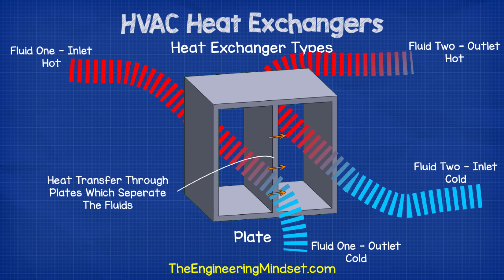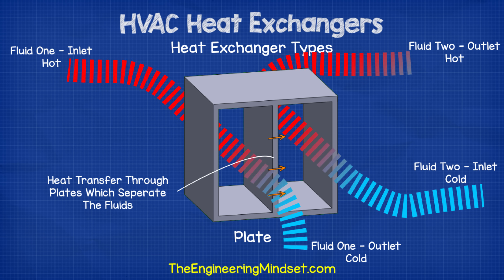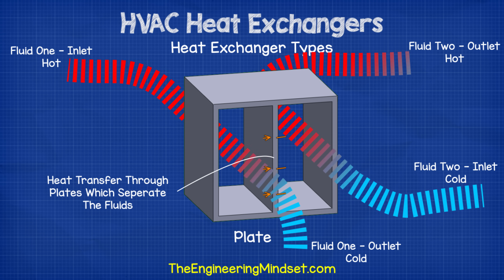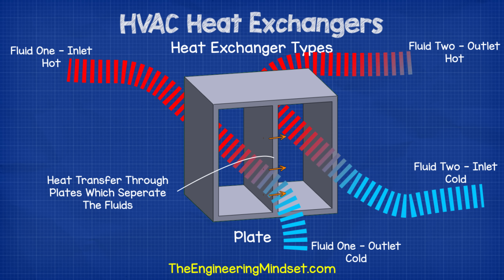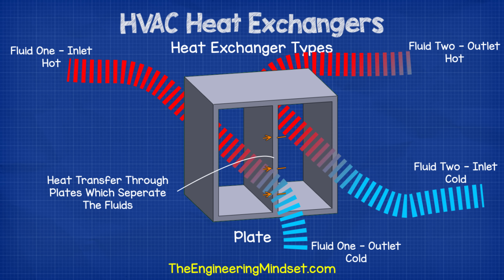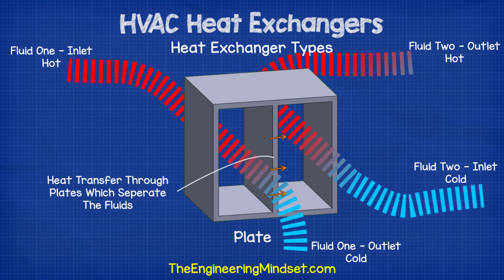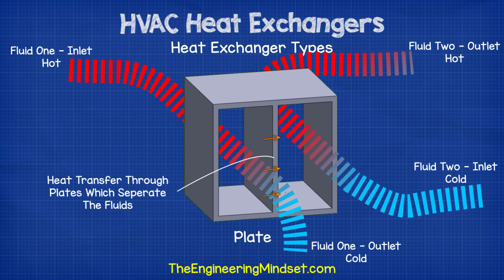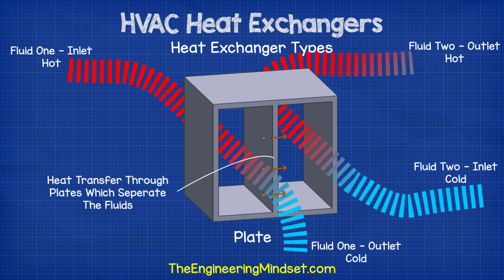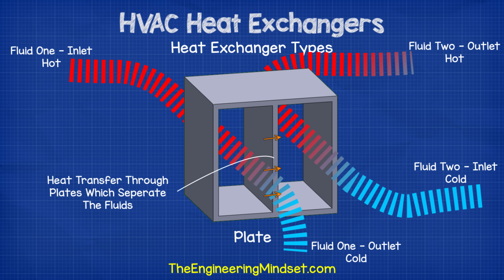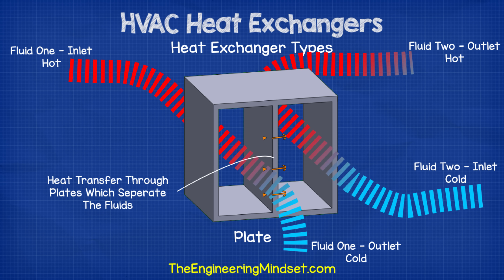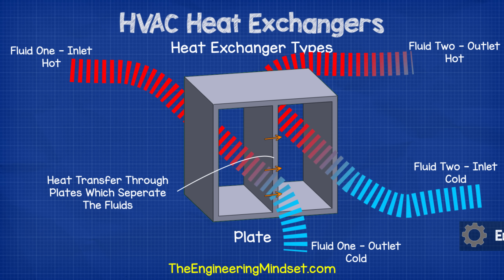Plate heat exchangers use thin plates of metal to separate the two fluids. The fluids generally flow in opposite directions to improve the heat transfer. The heat of the hottest fluid is convected onto the plate wall and conducted through to the other side, and the other fluid entering at a lower temperature then carries it away through convection.